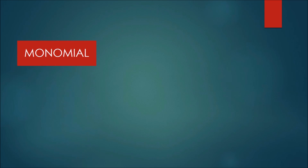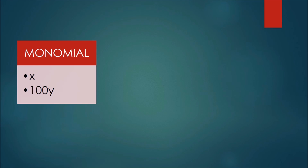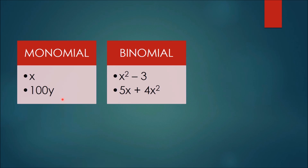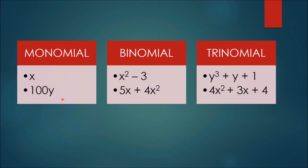A polynomial can have any finite number of terms. Based on the number of terms we classify polynomials. Polynomials having only one term are called monomials — for example, x and 100y each have only one term. Polynomials having two terms are called binomials — for example, x squared minus 3 and 5x plus 4x squared. Polynomials having three terms are called trinomials — for example, y cubed plus y plus 1, and 4x squared plus 3x plus 4.